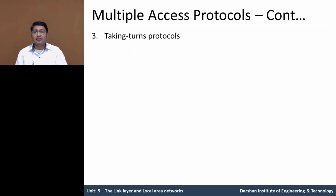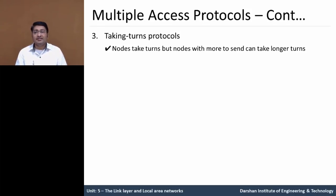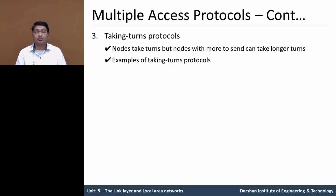The third multiple access protocol is the taking-turns protocol. A node takes a turn, but nodes with more to send can take longer turns. A node can take time whenever it completes transmitting its frame to the receiver. Examples of this protocol are polling and token passing.